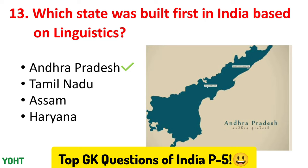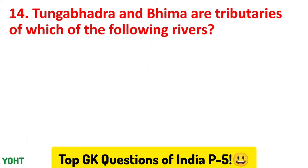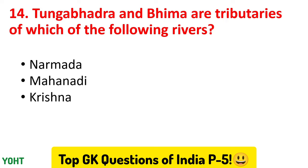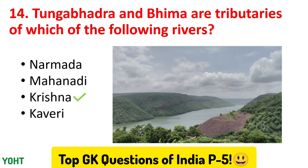Let us jump to the fourteenth question. Tungabhadra and Bhima are tributaries of which of the following rivers? The options are Narmada, Mahanadi, Krishna, and Kaveri. The correct answer to this question is Krishna.